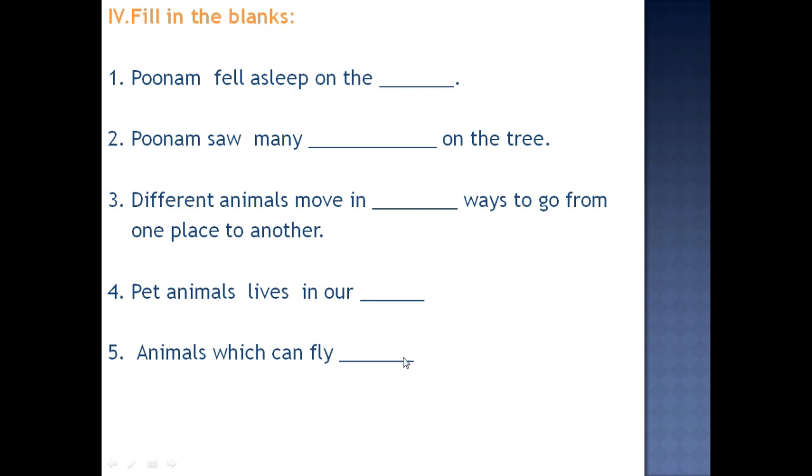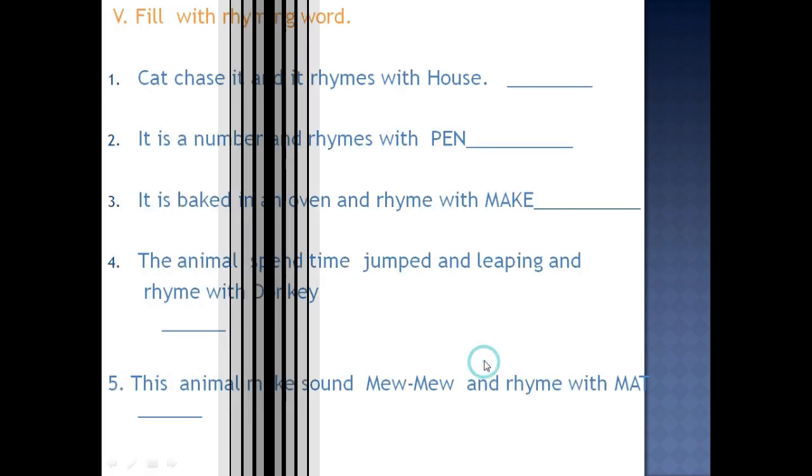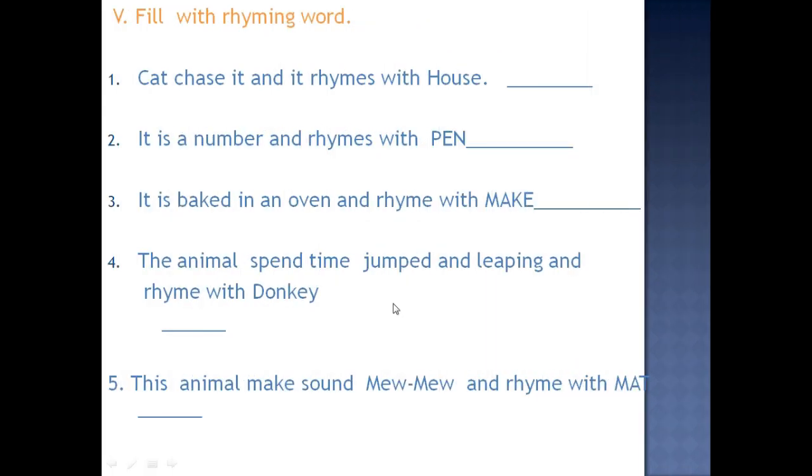Animals which can fly? Which animals fly? Yes. Parrot, crow, butterfly. So you can write any one of them in the fifth question. Next one. Fill with rhyming word. Cat chases and it rhymes with house. So cat, what does it chase? Yes, mouse. Very good. It is a number and rhymes with pen. So pen, but it should be a number. Number and pen rhyme. Pen rhyme is? That too, it is a number. So it's ten. Yes.